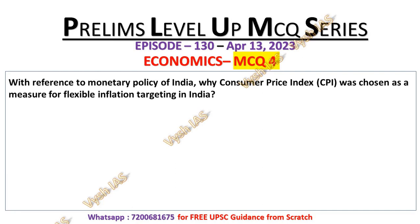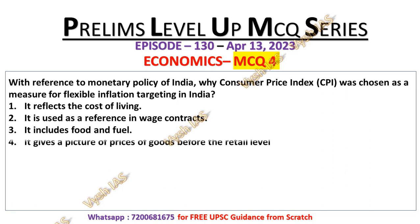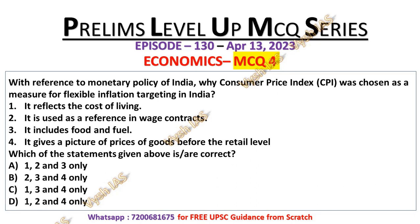MCQ number 4: With reference to monetary policy of India, why was the Consumer Price Index chosen as the measure for flexible inflation targeting in India? Statement 1: It reflects the cost of living. Statement 2: It is used as a reference in wage contracts. Statement 3: It includes food and fuel. Statement 4: It gives a picture of prices of goods before the retail level. Identify the correct statements. Options: A) 1, 2 and 3 only; B) 2, 3 and 4 only; C) 1, 3 and 4 only; D) 1, 2 and 4 only.